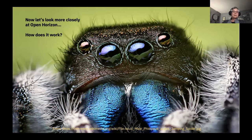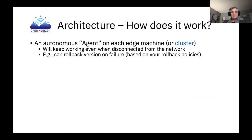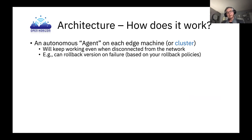Let's take a closer look at OpenHorizon. We have an autonomous agent on each edge machine, or each cluster node, and it will keep working even when it's disconnected from the network. If you are deploying a workload and it keeps failing, you can automatically roll back to an older version that you had running on that same node, even if the network is down. You specify how you want that to work by creating rollback policies, and there's quite a flexible language for defining multiple levels of rollback.